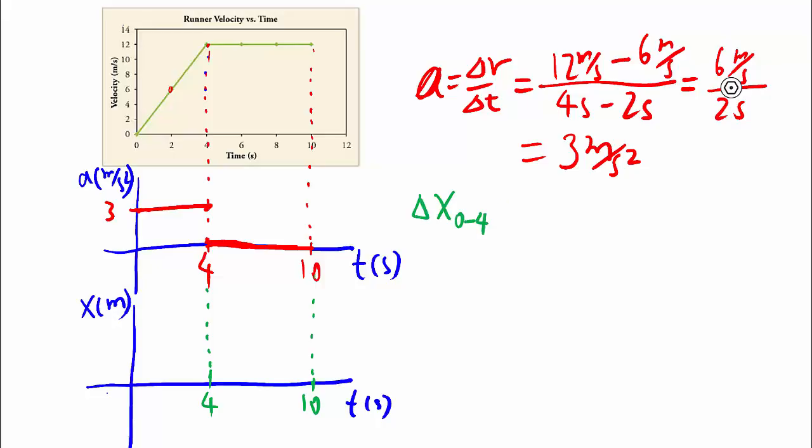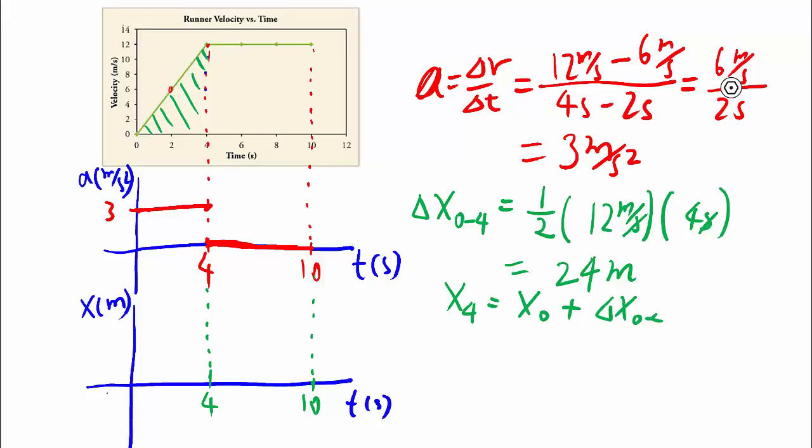The change in x from 0 to 4 seconds is given by the area under the curve between 0 and 4 seconds, so that part. It's a triangle, so we can use geometry to find out that it's 1 half times the height, which is 12 meters per second, times the base, which is 4 seconds. That cancels out. And with the 1 half, we get 24 meters. That's your change in your position. To get the actual position at 4 seconds, it's the initial position plus the change. So that's going to be negative 10 meters plus 24 meters, giving us 14 meters. Okay, so far so good.